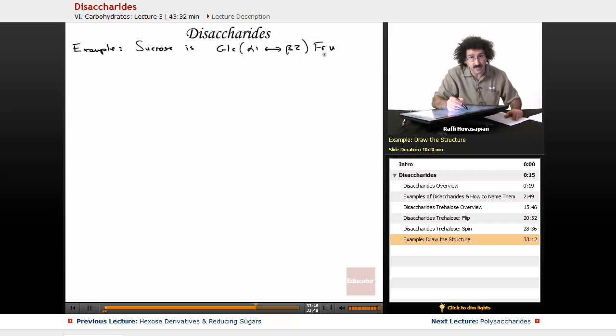Glucose is a hexose, it's a six-membered sugar. Fructose is a five-membered ring sugar. The glycoside bond connects the anomeric carbon, which is alpha, and the number two carbon, which is beta configuration on the fructose. So let's draw out the structure. In this particular case, we haven't given you a structure. We've given you the name in shortened form, and we want you to draw the structure.